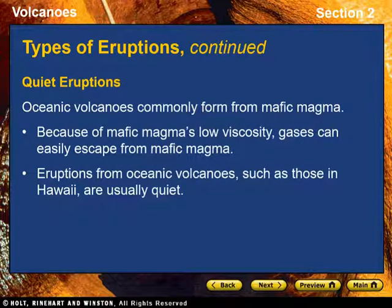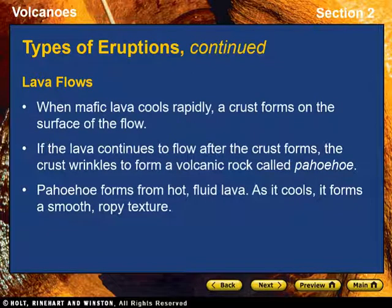Quiet Eruptions. Oceanic volcanoes commonly form from mafic magma. Because of mafic magma's low viscosity, gases can easily escape from mafic magma. Eruptions from oceanic volcanoes, such as those in Hawaii, are usually quiet. Lava Flows: when mafic lava cools rapidly, a crust forms on the surface of the flow. If the lava continues to flow after the crust forms, the crust wrinkles to form a volcanic rock called pahoehoe.